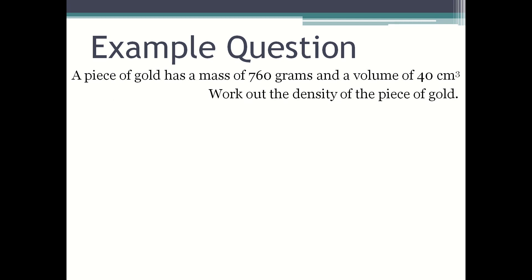Now we're going to look at an example question. A piece of gold has a mass of 760 grams and a volume of 40 centimeters cubed. Work out the density of the piece of gold. First state the formula, which is density equals mass divided by volume.